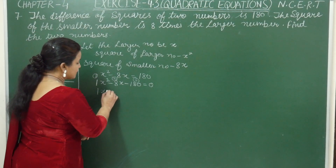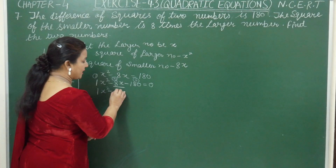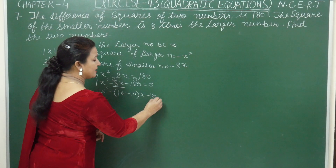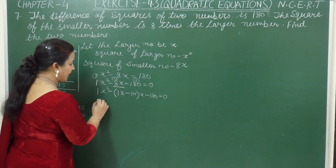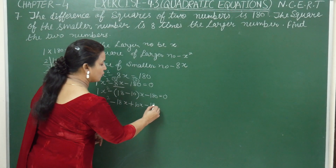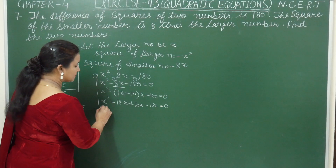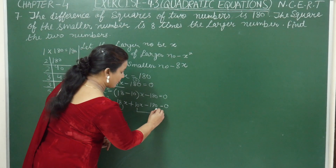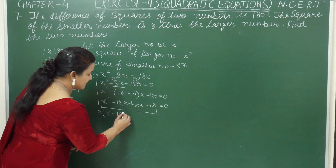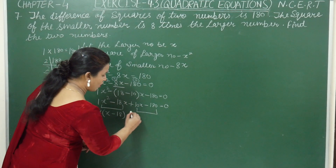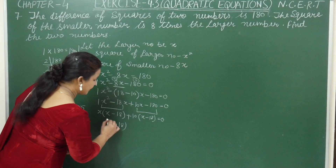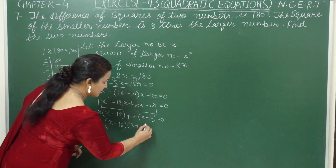So we split −8x into −18x + 10x. The equation becomes: x squared − 18x + 10x − 180 = 0. Now taking common from the first two terms and the last two terms: x(x − 18) + 10(x − 18) = 0. Therefore (x − 18)(x + 10) = 0.